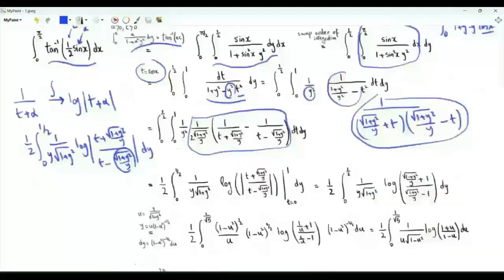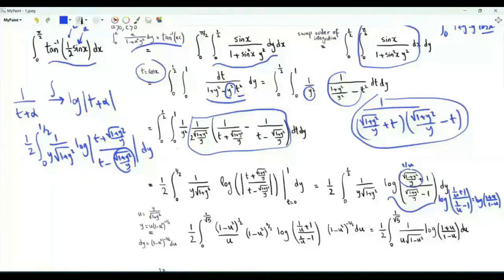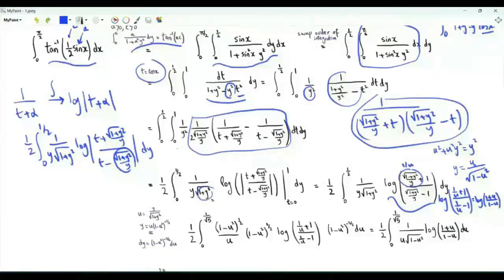Note that √(1+y²)/y is greater than 1. So when t = 1, we get log of (√(1+y²)/y + 1) over (√(1+y²)/y − 1). Setting this expression equal to 1/u, we get log (1/u + 1)/(1/u − 1), and multiplying numerator and denominator by u gives log (1 + u)/(1 − u). Here u = y / √(1 + y²), so u² + u²y² = y², giving y = u / √(1 − u²), and 1 + y² = 1/(1 − u²).